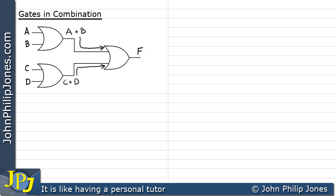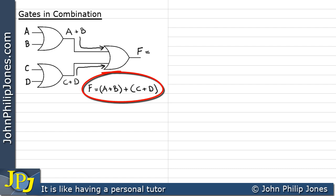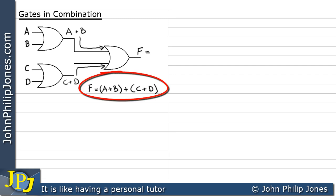F equals the inputs to this particular OR gate all ORed together. The first input to the gate is A or B — I'll put brackets around that so we can easily distinguish it as one of the inputs. And we OR that with the other input, which is C or D, also in brackets. That is the Boolean expression at F, representing the functionality of these OR gates in combination.